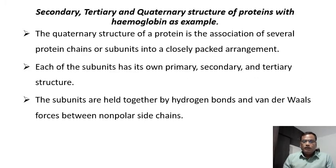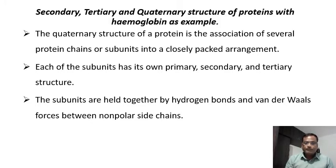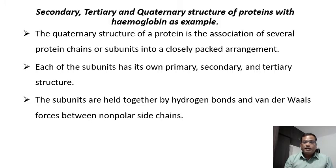The quaternary structure of a protein is the association of several protein chains or subunits in a closely packed arrangement. Two or more polypeptide chains come together, interact, and all the subunits get packed into a common structure — that is the quaternary structure. Each subunit has its own primary, secondary, and tertiary structure. The subunits are held together by hydrogen bonds and van der Waals forces between non-polar side chains.